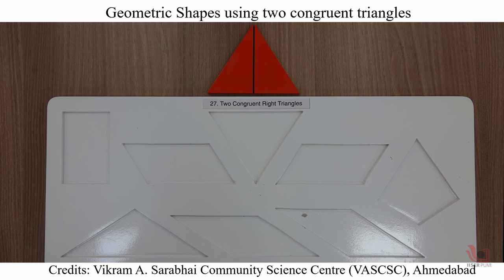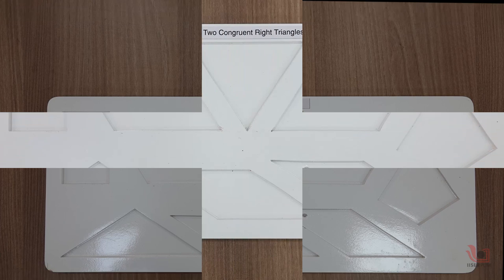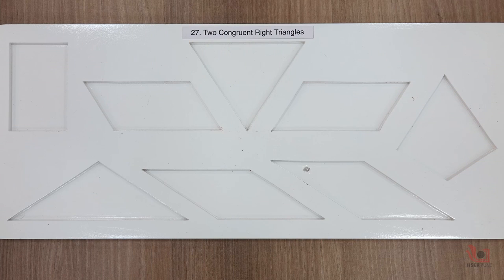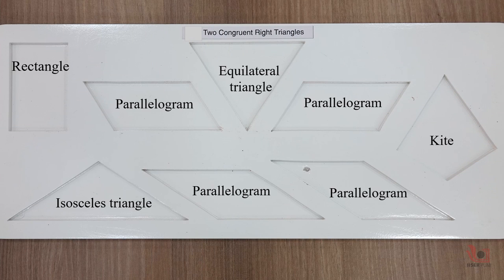Various geometrical shapes like equilateral triangle, rectangle, parallelogram, kite, and isosceles triangle are made on the wooden board.